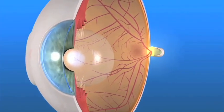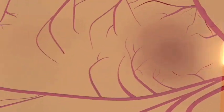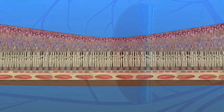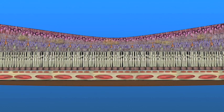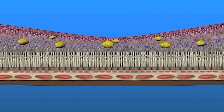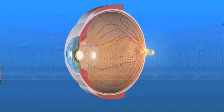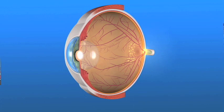With Non-Proliferative Diabetic Retinopathy, or NPDR, damaged blood vessels in the retina begin to leak fluids, including small amounts of blood, into the retina. Sometimes, deposits of fats may leak inside the retina. These deposits are called hard exudates.